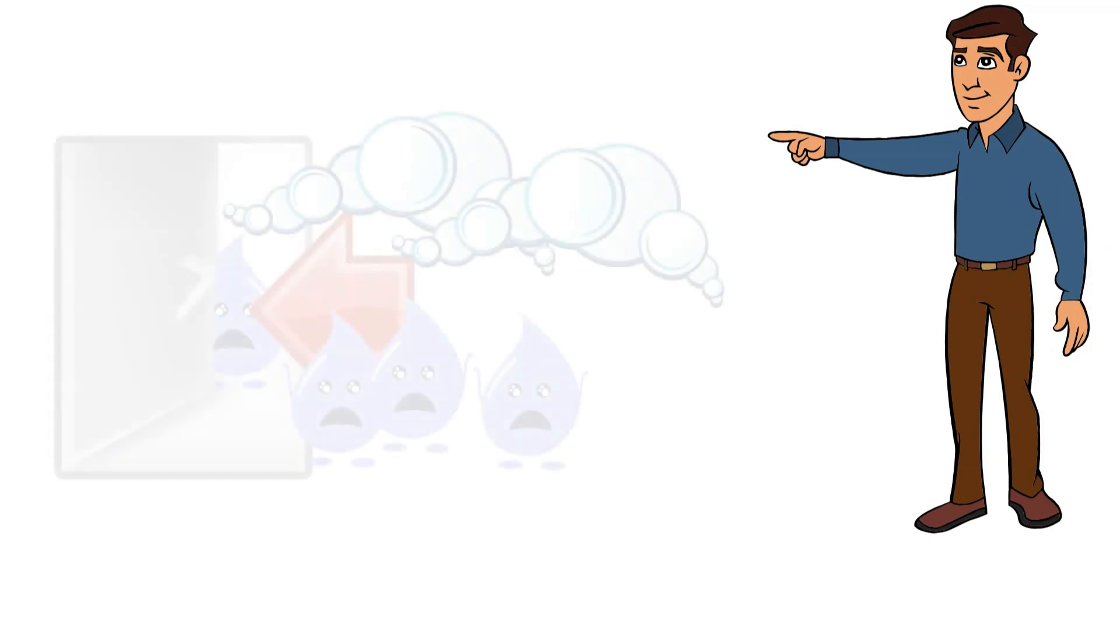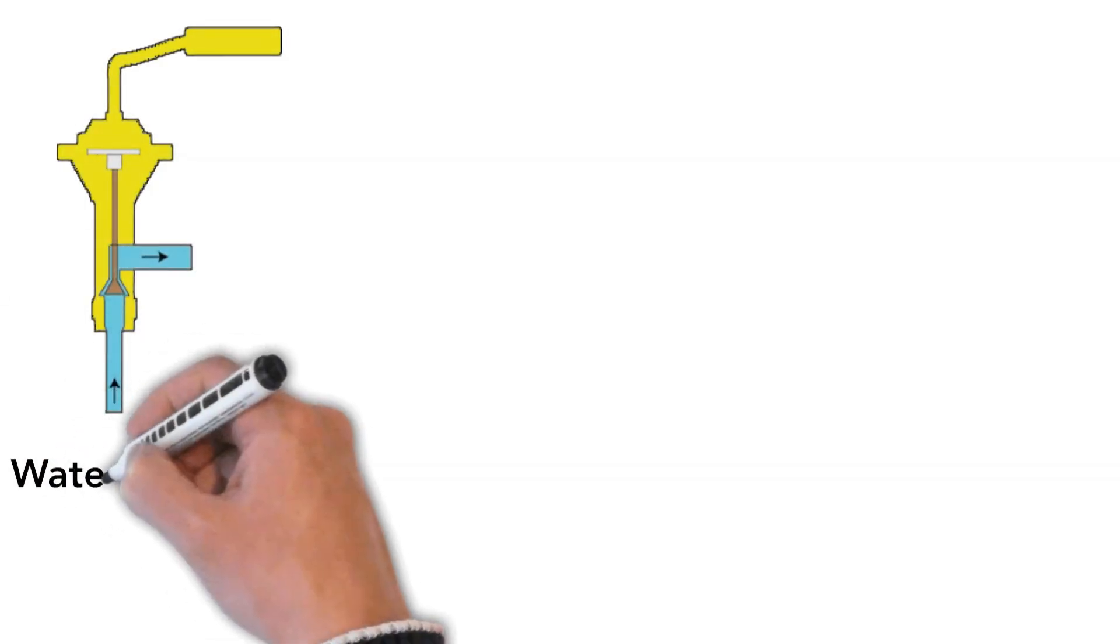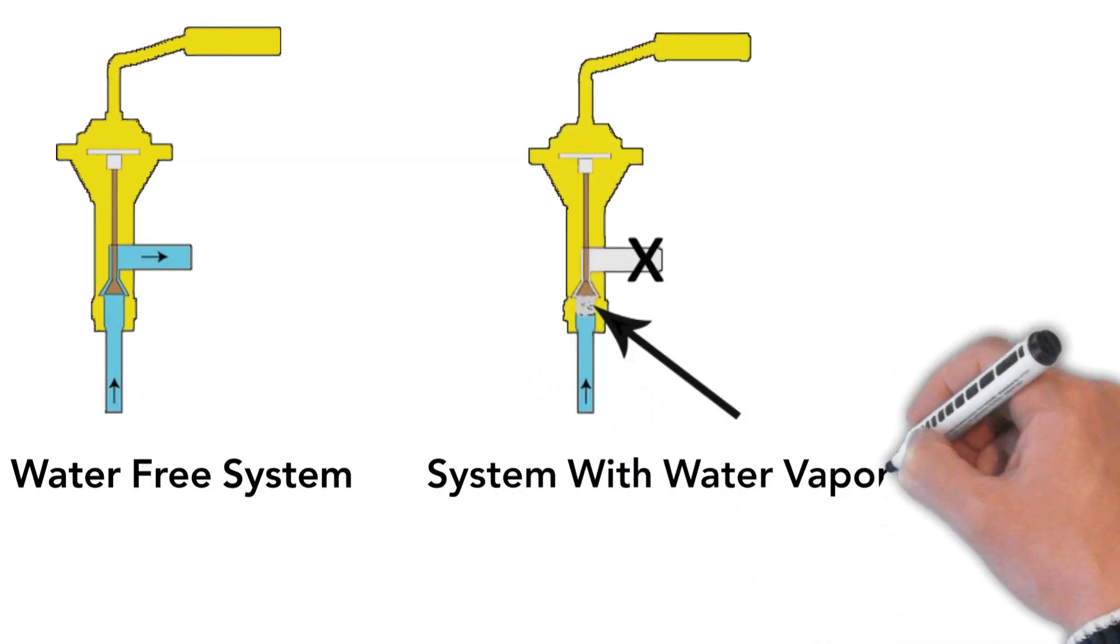Water vapor must be removed from HVAC systems for several reasons. Water vapor can freeze up at the expansion devices, such as thermal expansion valves and capillary tubes, causing a complete loss of the cooling effect.